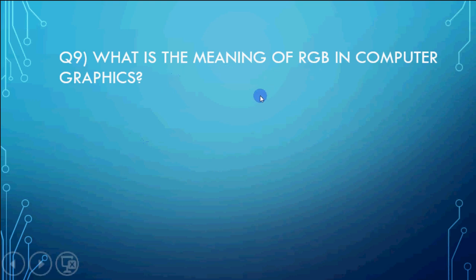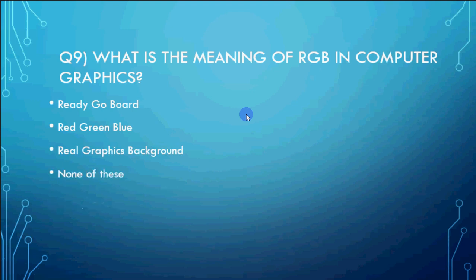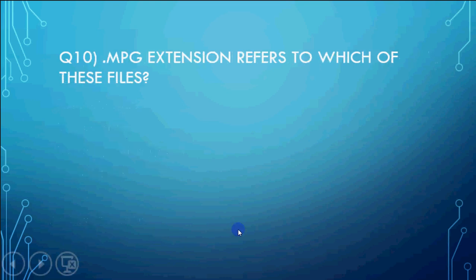What is the meaning of RGB in computer graphics? Ready go board, red green blue, real graphics background, none of these. The answer is red green blue. So in computer graphics every color is made with a combination of red green blue. Hamare paas 256 shades hoti hai har color ke. So there are 256 shades of red, 256 shades of green and 256 shades of blue. Jin ko mila kar ye color bantay hai. So yahan pe RGB ka matlab hoti hai red green and blue.